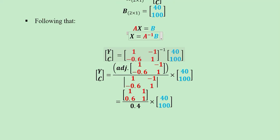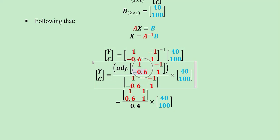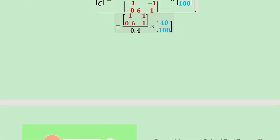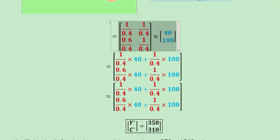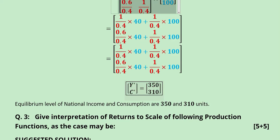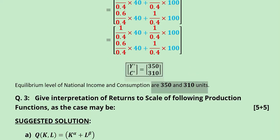To find A inverse, we take the ratio of the adjoint of matrix A to its determinant. The adjoint is calculated in the numerator and the determinant in the denominator, while matrix b remains in place. We divide throughout by the determinant, which was 0.4, and then multiply the two matrices — the conformity condition is satisfied. Solving gives us the equilibrium values of national income and consumption, which we denote with a star to indicate equilibrium status.